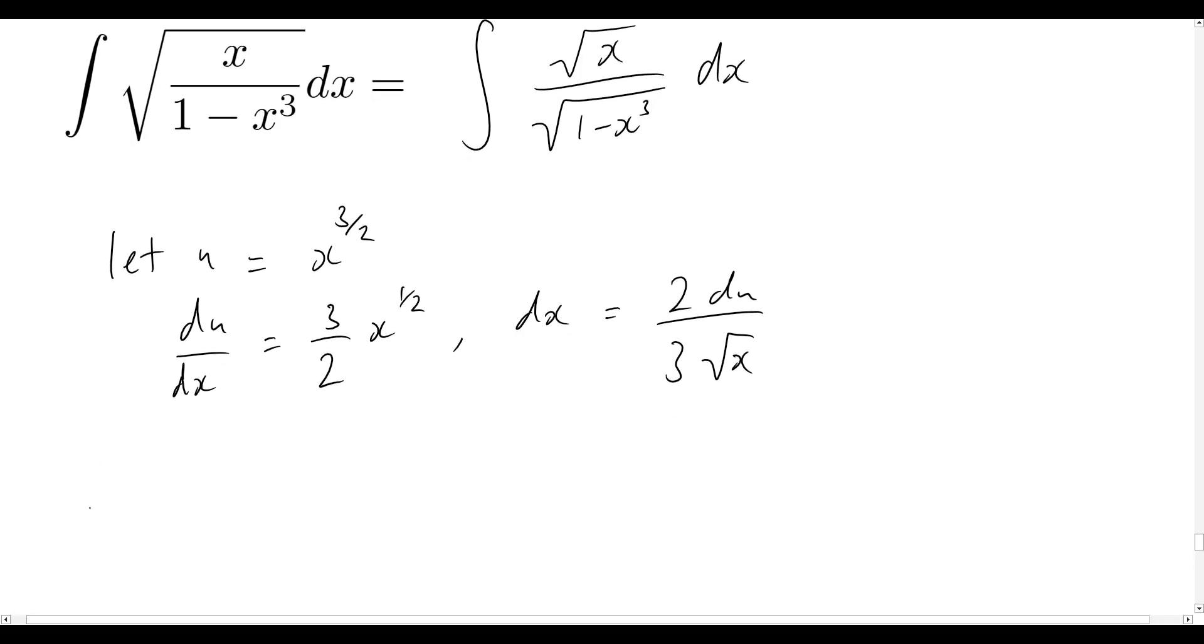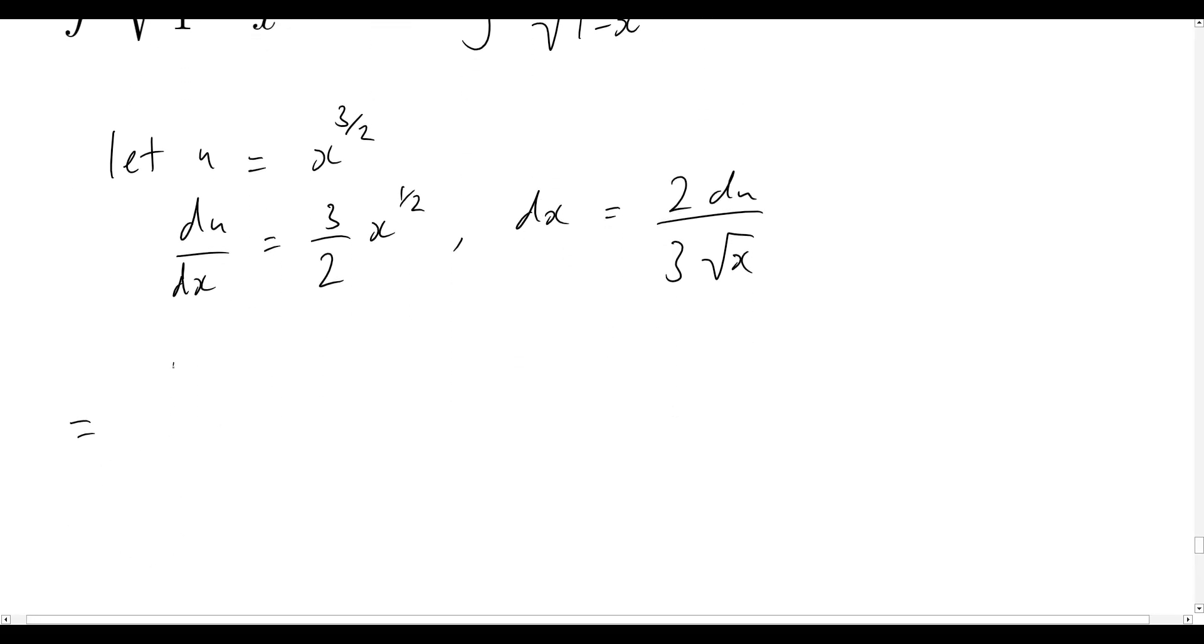Okay, let's quickly rewrite our problem now and see what that becomes. So now we have the integral of square root of x over square root of 1 minus, well I had said that u is equal to x to the power of 3/2, so this will now become simply u squared.